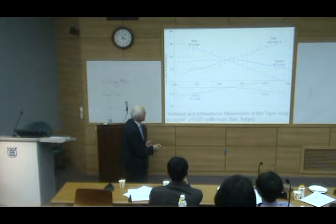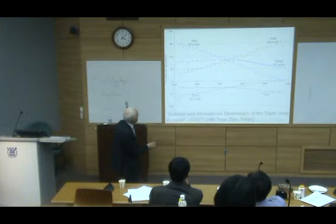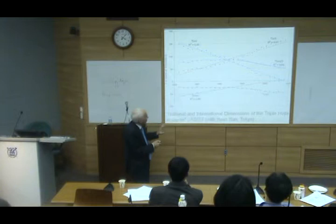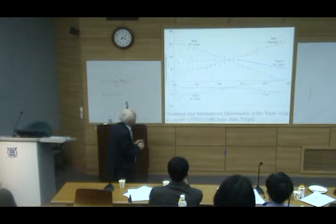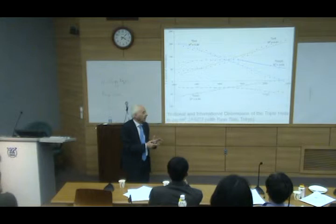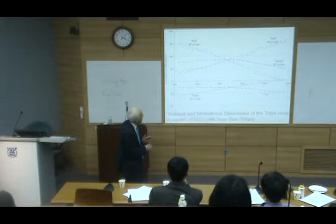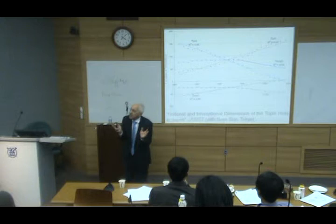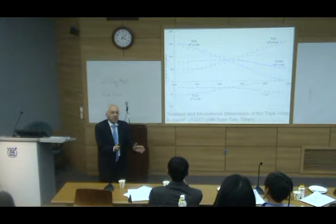Here you see university-government relations, industry-government relations, and this is now a very interesting curve — the curve of the four relations. You cannot directly relate three dimensions to two dimensions or four dimensions. You can study it in itself, and then you see that there are four dimensions. When the university, the industry, the government, and the foreign people are involved, there is a reduction of uncertainty in the system, and that takes place from 1992 onwards. What happened in the early 90s? It's China, it's the disappearance of the Soviet Union, it's globalization.